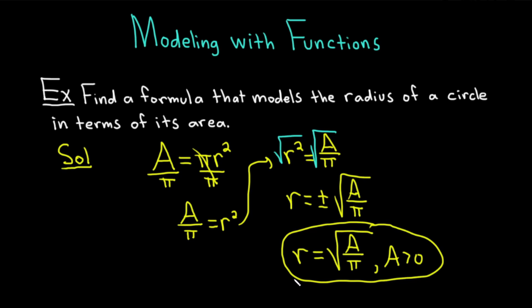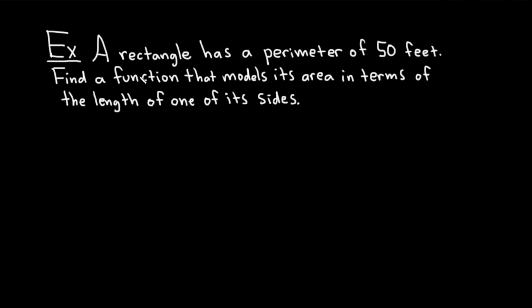Let's go ahead and do one more example. A rectangle has a perimeter of 50 feet. Find a function that models its area in terms of the length of one of its sides. Let's work through this solution.